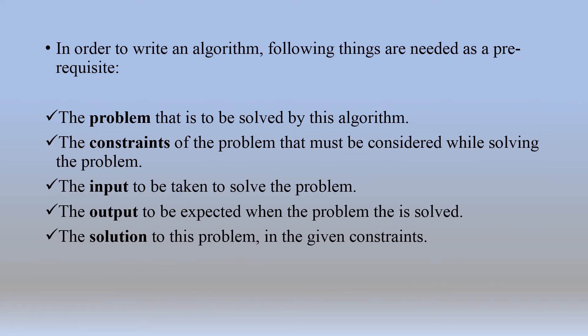In order to write an algorithm, the following things are needed as a prerequisite: first, the problem that is to be solved by this algorithm; second, the constraints of the problem that must be considered while solving the problem; third, the input to be taken to solve the problem; fourth, the output to be expected when the problem is solved; fifth, the goal to properly achieve; and finally, the solution to this problem within the given constraints.